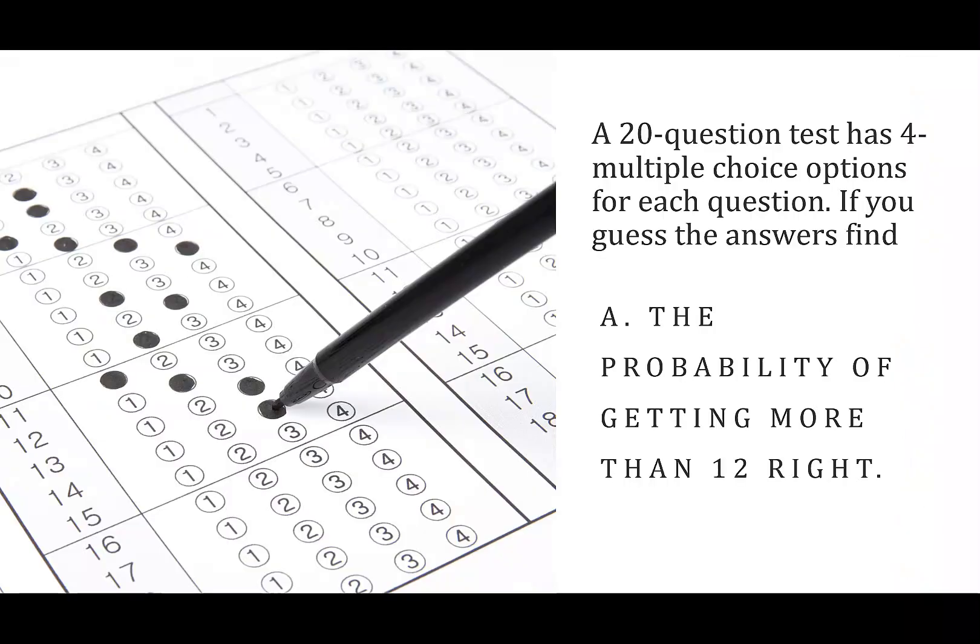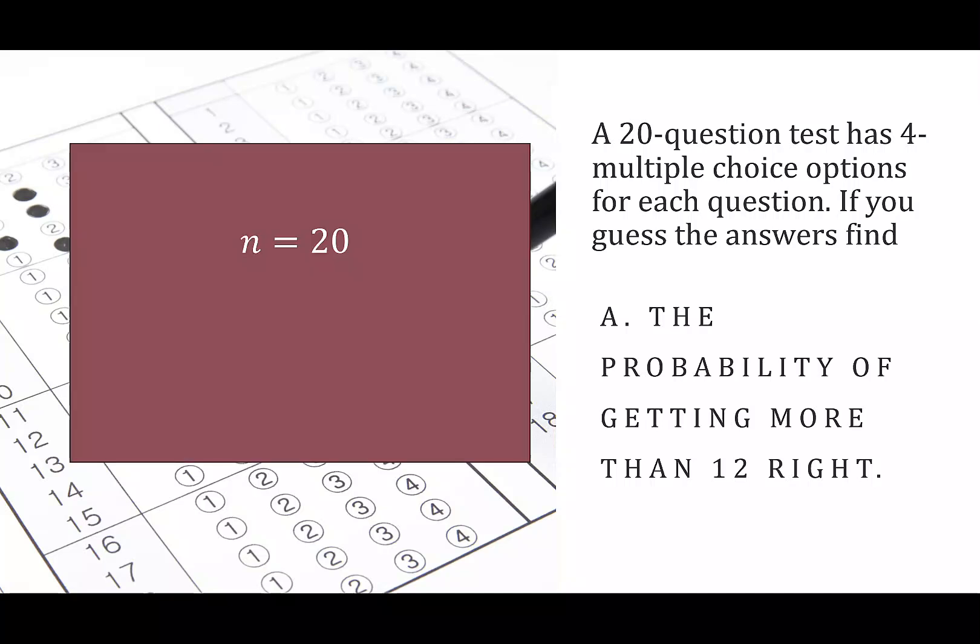So let's look at our example. A 20-question test has four multiple-choice options for each question. If you guess the answers, we're going to find the probability of getting more than 12 right. In this situation, n is 20. That's how many times we're doing this experiment, which is guessing the answers. The probability of success is one-fourth. There are four possibilities, only one of them is right, so the probability of success is 1 over 4. I'm going to write that as 0.25. So our binomial distribution has 20 trials, and our probability of success each time is 0.25.